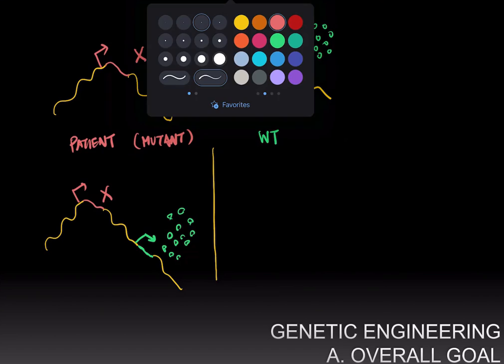And so by doing this, we can correct the problem or we can give new abilities to crops, for example, and that's what GMOs, genetically modified organism crops are, where you have supplied those plants with a gene and a gene product or protein that they normally don't have, and that gives them some new capability.